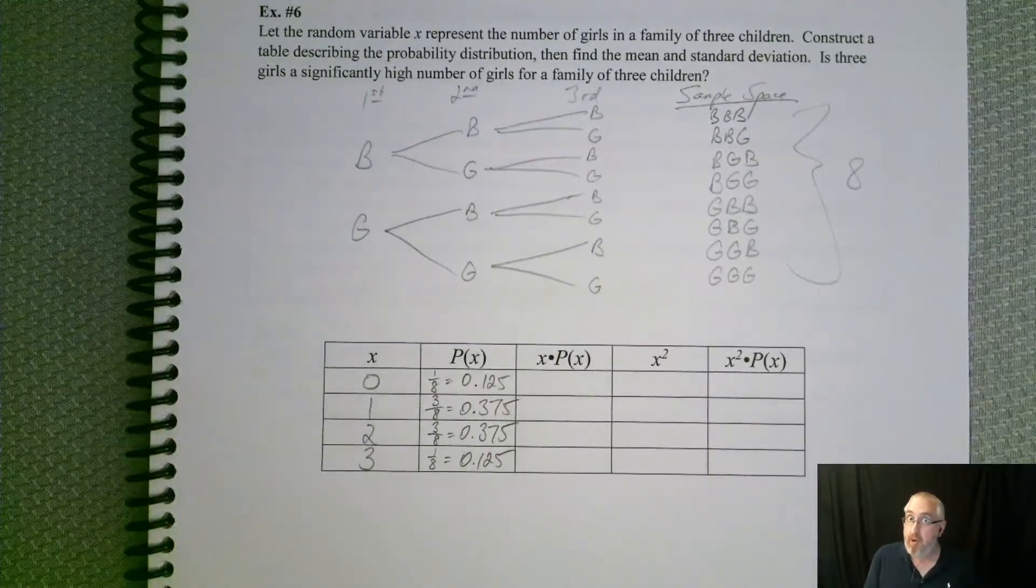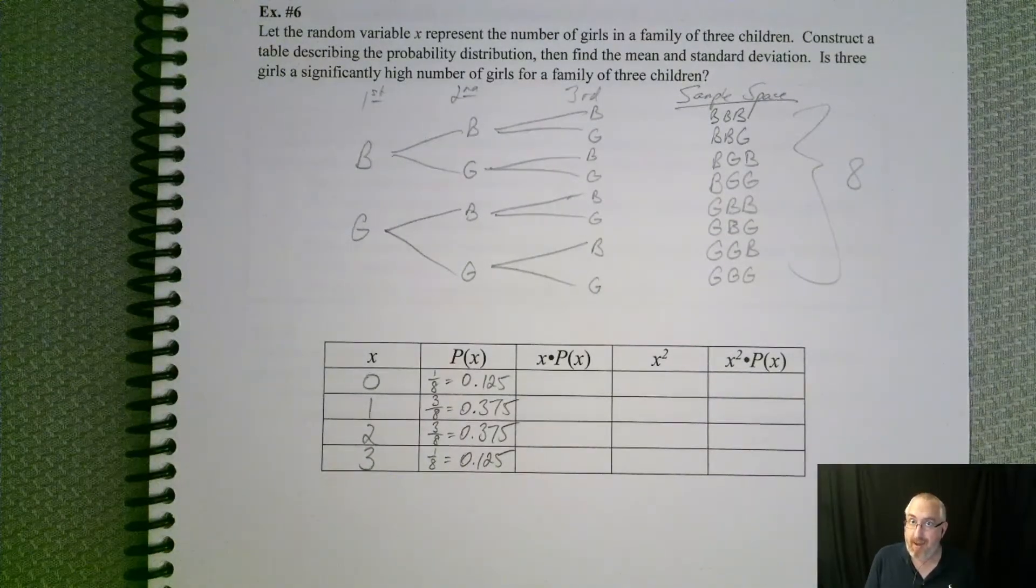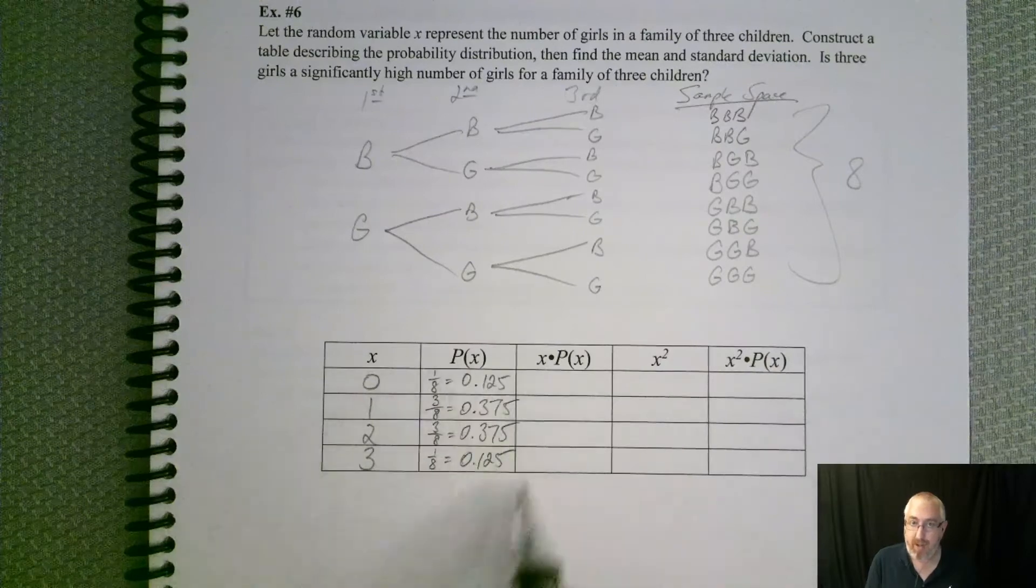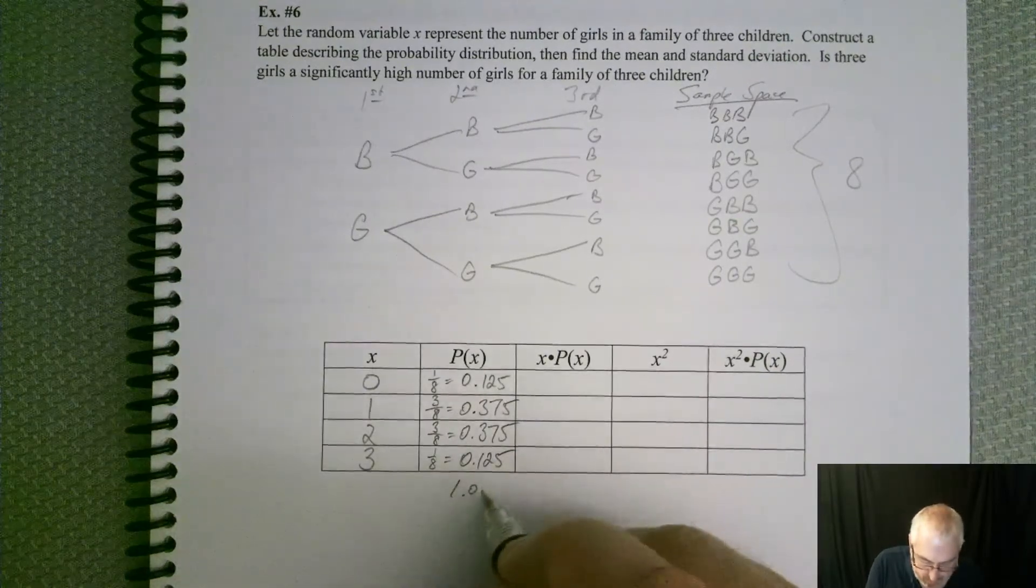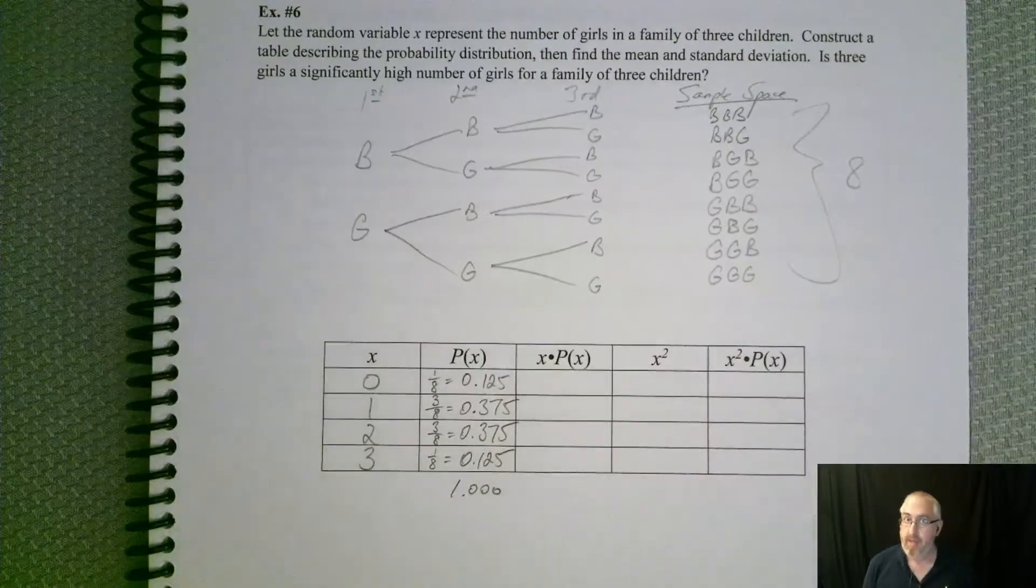And there's only one case where it's all girls. Now, remember, if you're not sure if you did it right, how can you check? What do we know about all of our probabilities? They better add up to one.